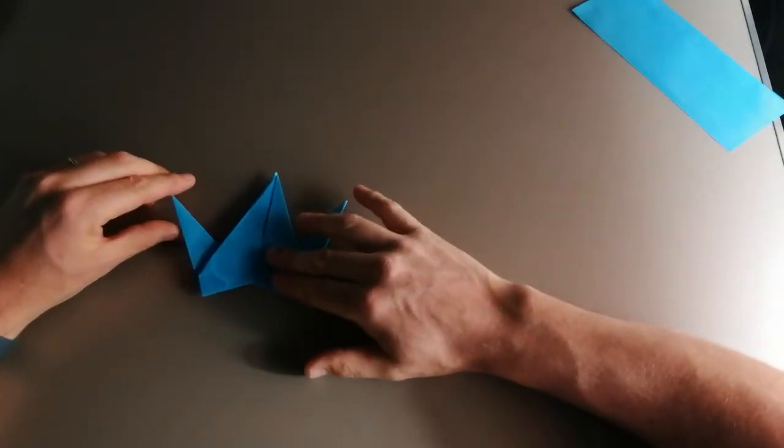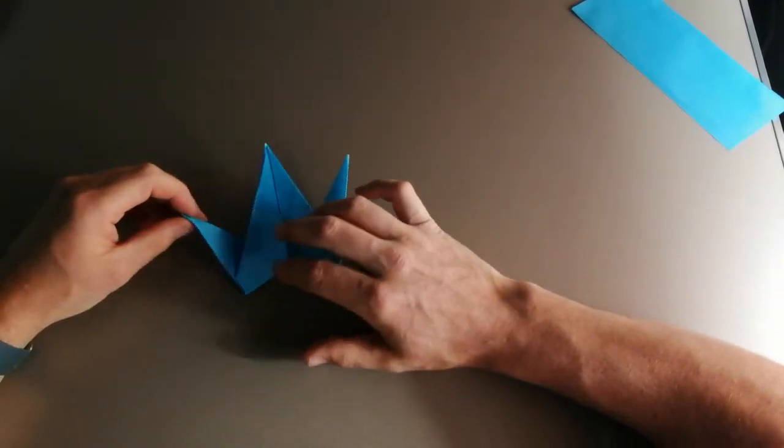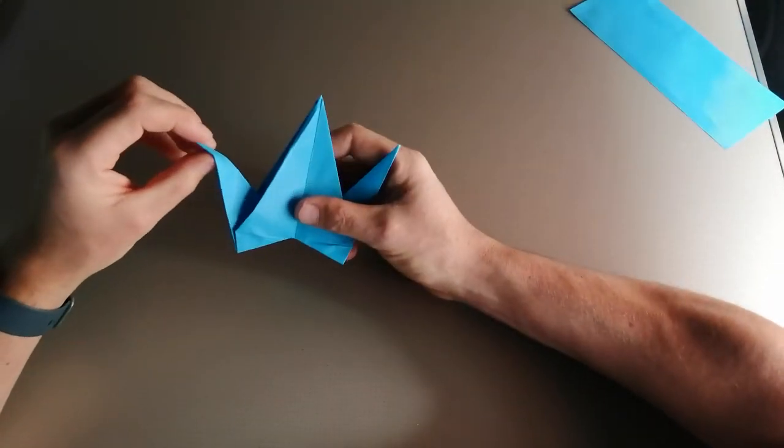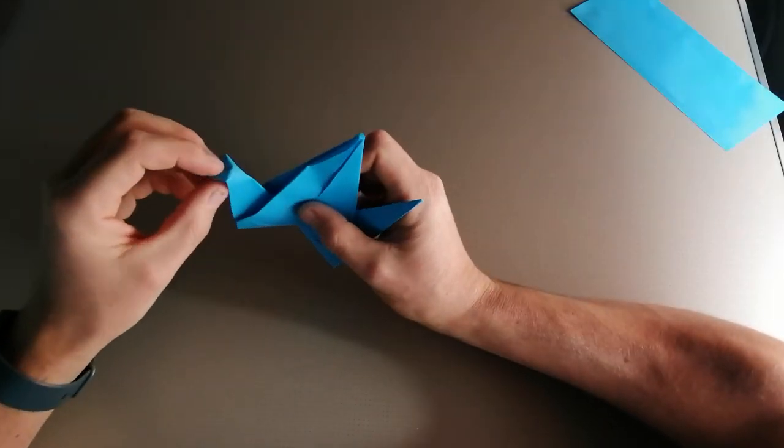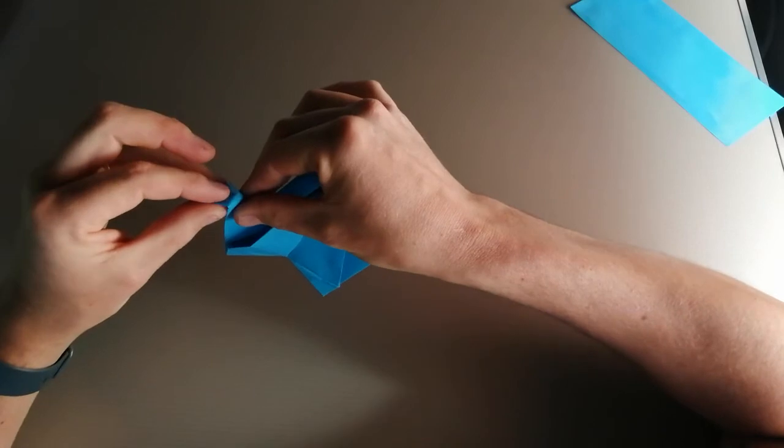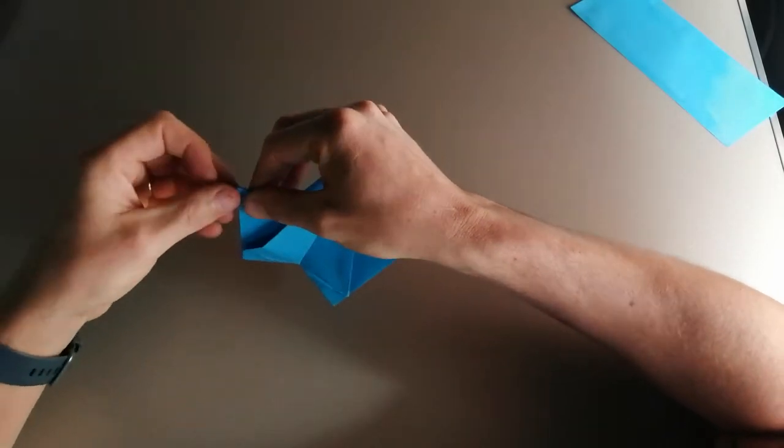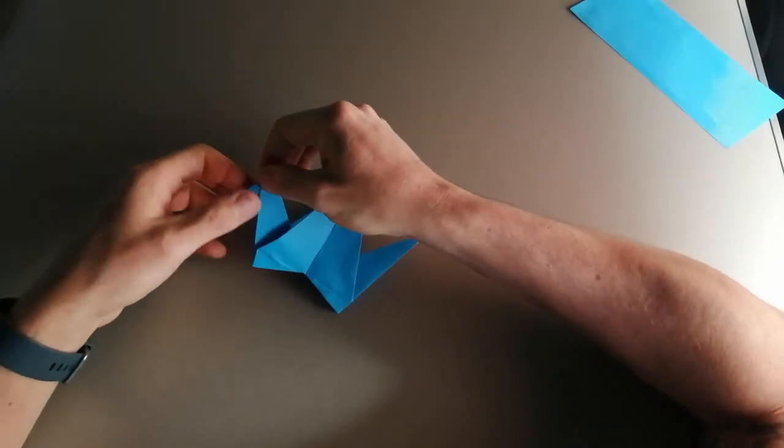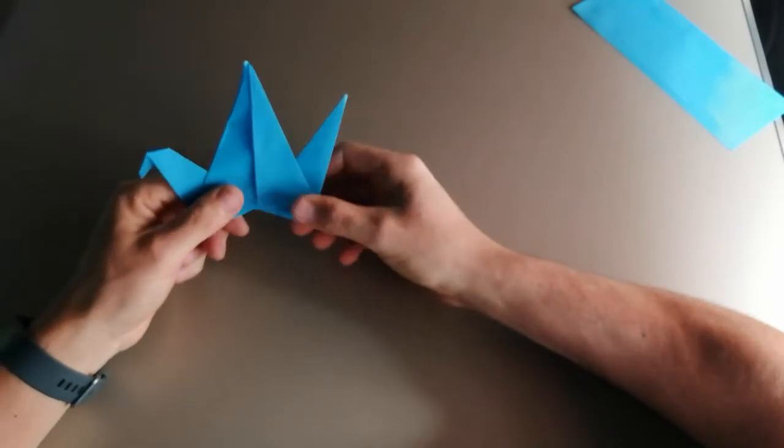So I'm going to have the head here on the left hand side. So using my thumb, I'm going to push up and then push the crease down, creating a reverse fold. That's going to give us the head of our bird.